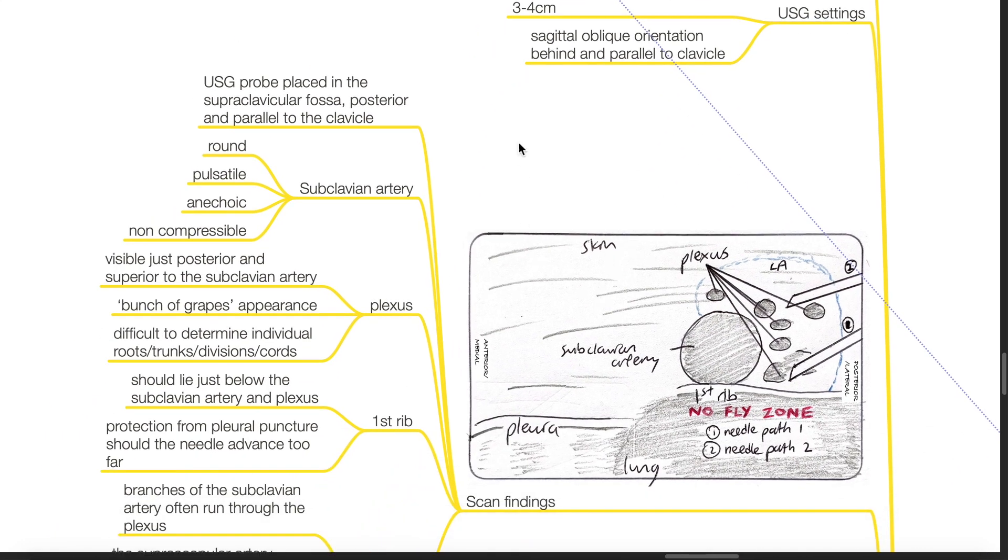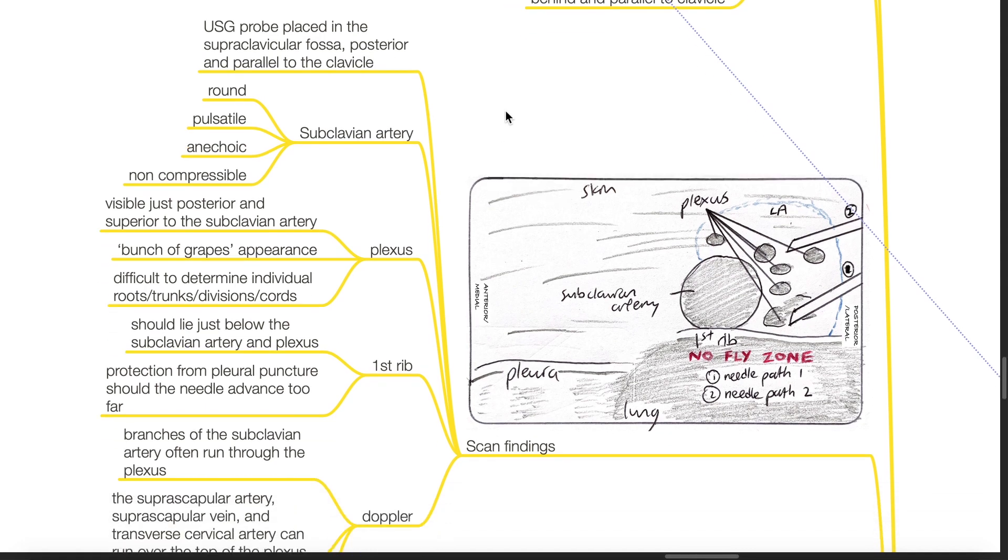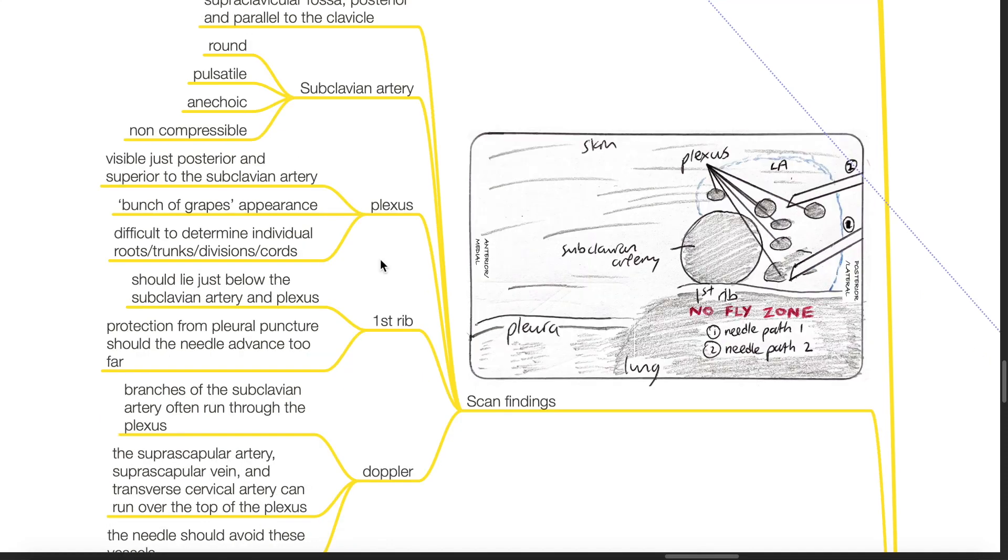Scan findings. Ultrasound probe is placed in the supraclavicular fossa, posterior and parallel to the clavicle. The subclavian artery is seen as a round, pulsatile, anechoic, and non-compressible structure. The plexus is visible just posterior and superior to the subclavian artery with a bunch of grapes appearance.